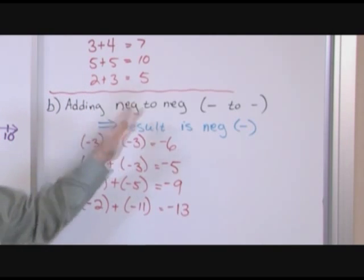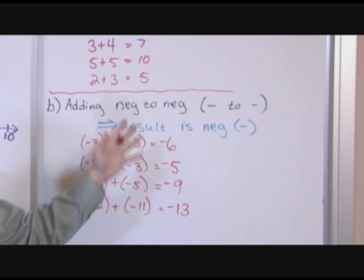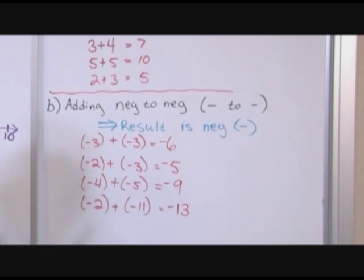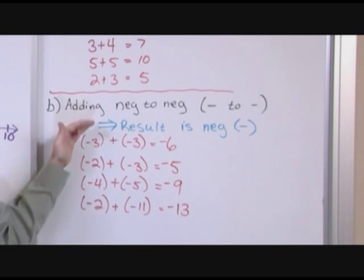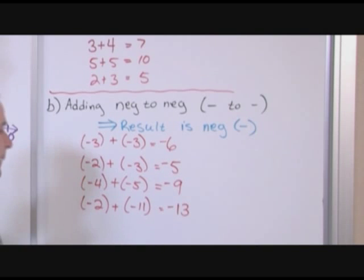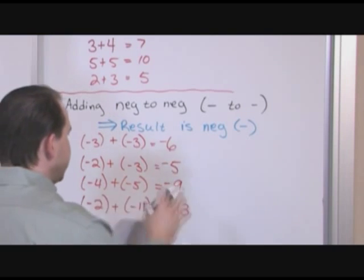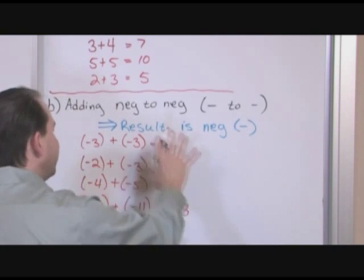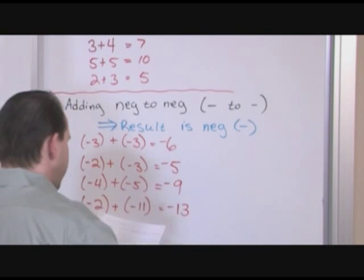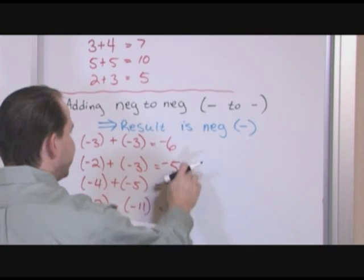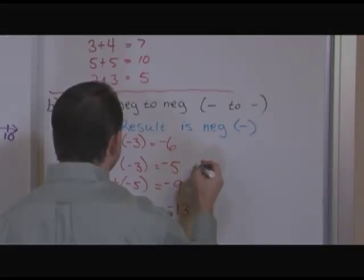You've already learned something that a lot of people struggle with in pre-algebra. Negative plus negative is negative — if you know what it means, it is definitely not hard. Now I want to show you one more thing with the number line, so let's take this example right here.